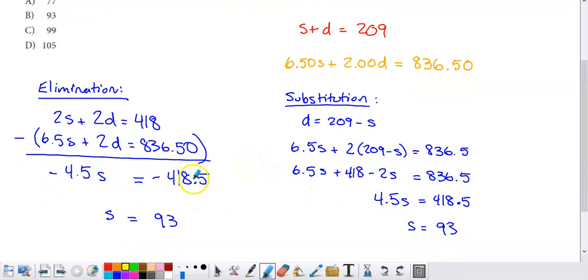So for elimination, what you have to do is you either have to add or subtract your equations in a way that eliminates a variable. And like I mentioned a few minutes ago, strategically, it's going to make more sense for us to eliminate D because we don't necessarily need to know the answer for D. We only need to know the answer for S.